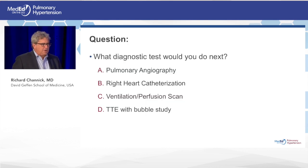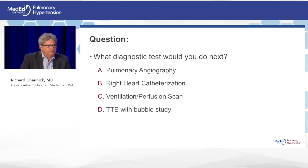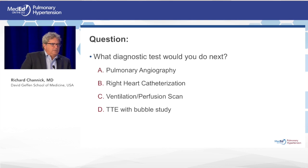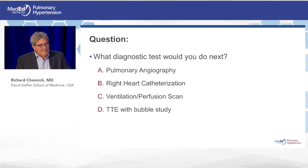Despite this seeming like a clear diagnosis, additional testing was felt to be needed. The question posed to the audience: what diagnostic test would you do next? Options include pulmonary angiography, right heart cath, VQ scan, or echo with bubble. Obviously more than one of those might be done, but what would be the key test to do next?